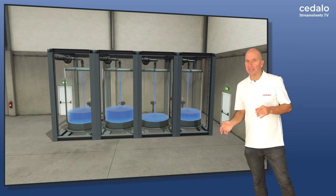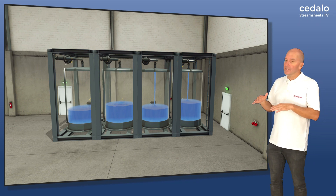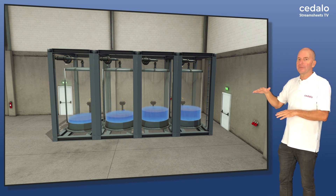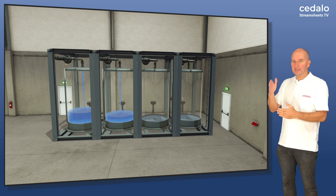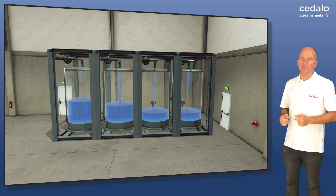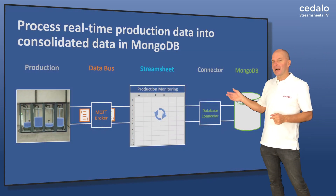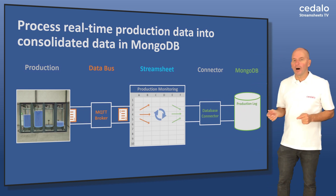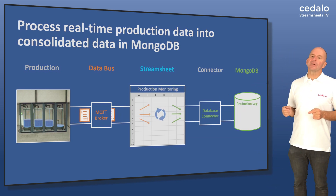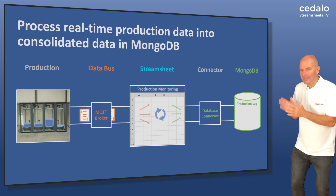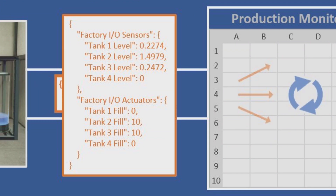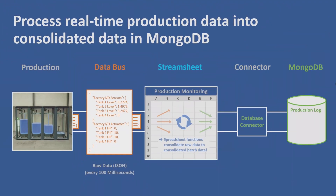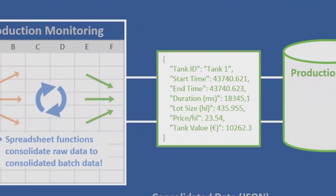Here we see the production facility in detail. Quantities of liquids with varying batch sizes are filled in a repeating production process, and we have sensors that continuously report the level and the status of the inlet valve. The sensors publish their values every hundred milliseconds to a specific topic on the MQTT broker. The StreamSheet recalculates itself at exactly the same frequency. The sensor data is formatted and directly and dynamically linked to the StreamSheet cells.